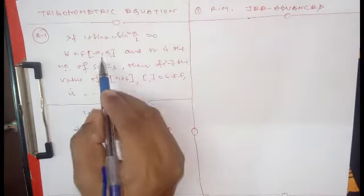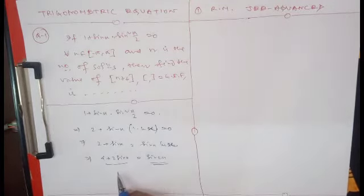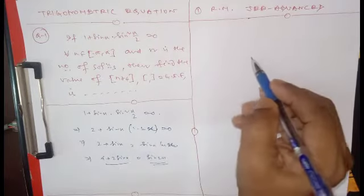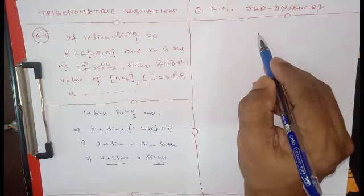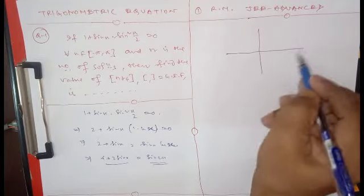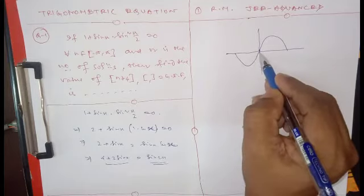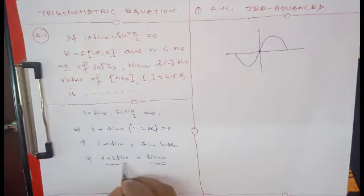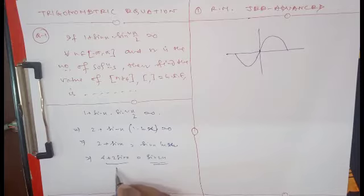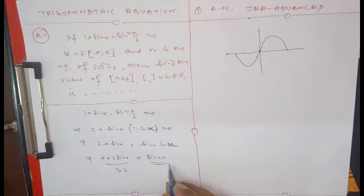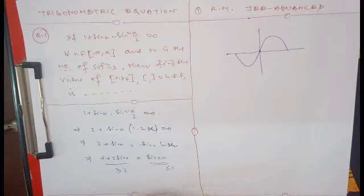Now look at the range. The left-hand side, 4 + 2sin(x), has a minimum value of 2 (since sin x ≥ -1). So the left-hand side is always greater than or equal to 2. But the right-hand side, sin(2x), is always less than or equal to 1. The two sides can never balance.